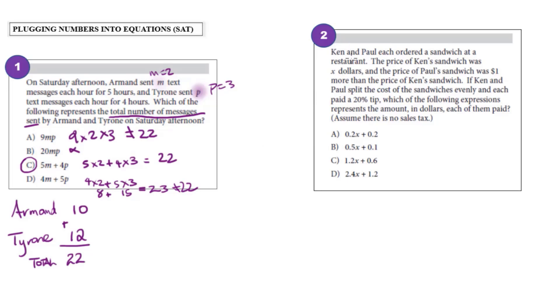In the second question, it says that Ken and Paul each ordered a sandwich at a restaurant. The price of Ken's sandwich was X dollars and the price of Paul's sandwich was one dollar more than the price of Ken's sandwich.